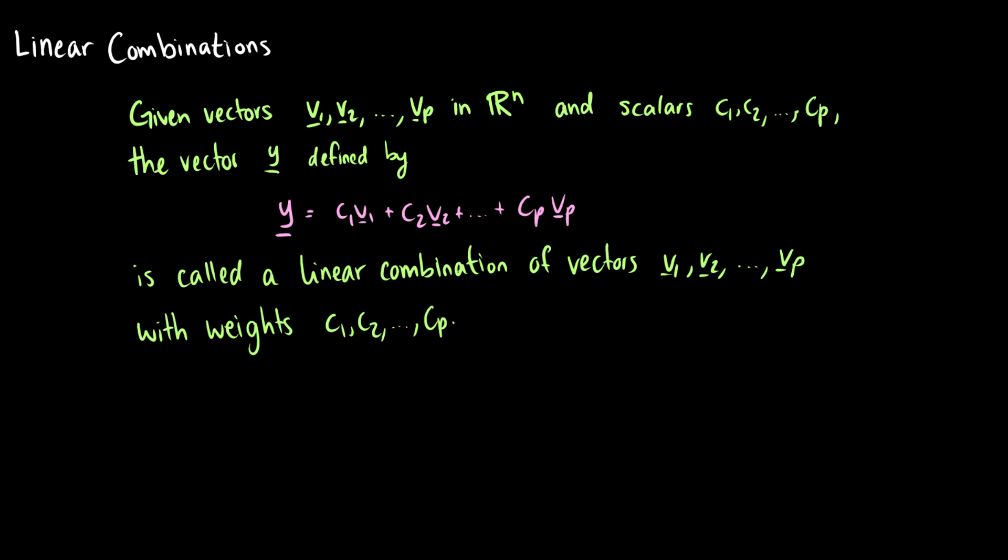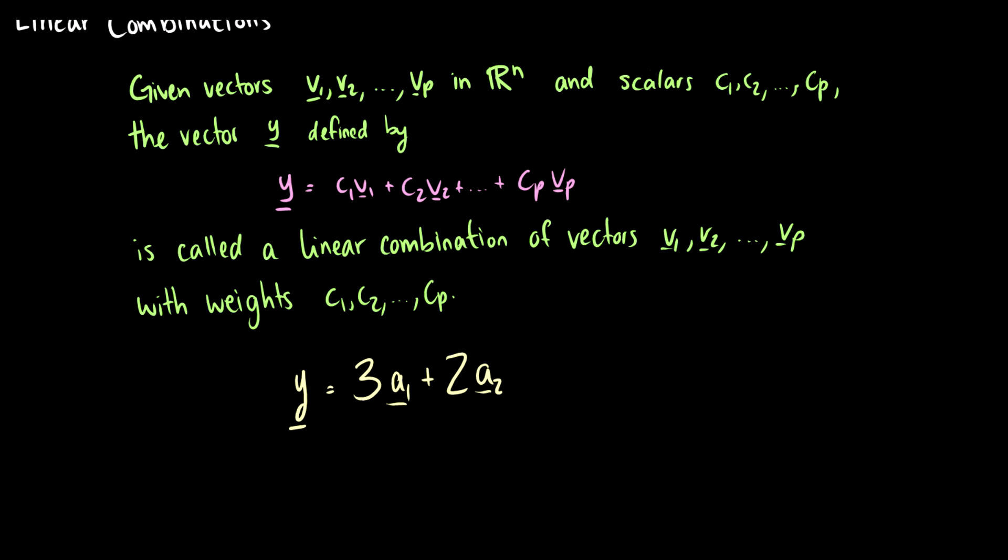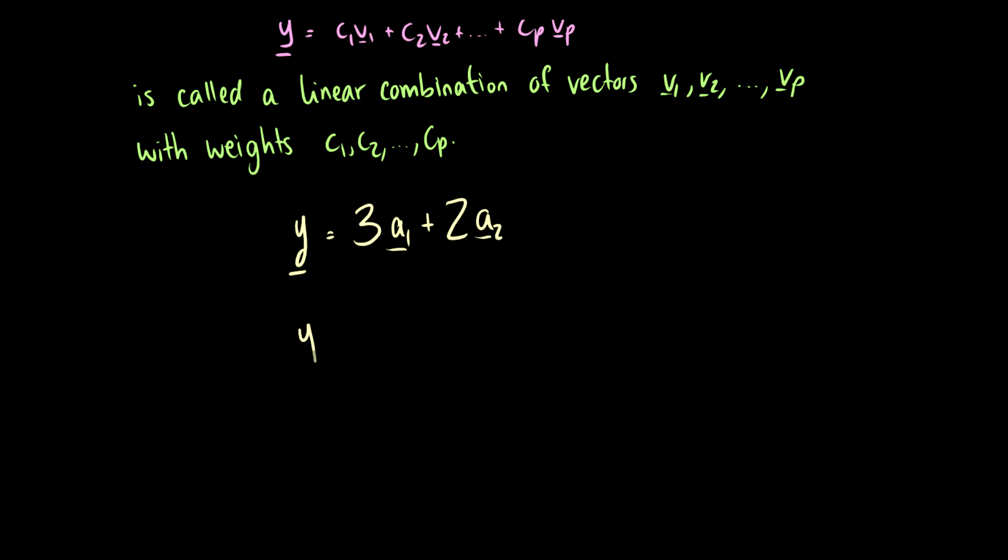So what does this look like? What's an example? Let's say y is equal to three times the vector a1 plus two times the vector a2. That is an example of a linear combination. Or perhaps in the previous video you might have seen this as y equals c times the vector u plus c times the vector v. So this is another way of saying a linear combination, but we just have a little bit more general variables saying okay it's up to p scalars and p vectors.